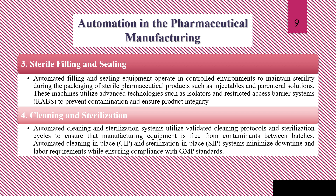Similarly, automated coating machines are also being used to apply coatings which are responsible for masking the taste of tablets. Third is sterile filling and sealing. Automated filling and sealing implements operate in controlled environments to maintain sterility during packaging of sterile pharmaceutical products, for example injectables and bacterial solutions. These machines utilize advanced technologies such as Restricted Access Barrier Systems (RABS) to control contamination. Then we come on to cleaning and sterilization, utilizing validated cleaning protocols and sterilization cycles to ensure equipment cleanliness.